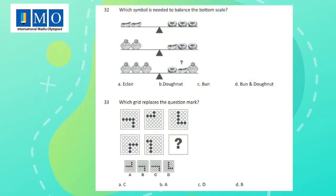Question 32: Which symbol is needed to balance the bottom scale? Question 33: Which grid replaces the question mark?